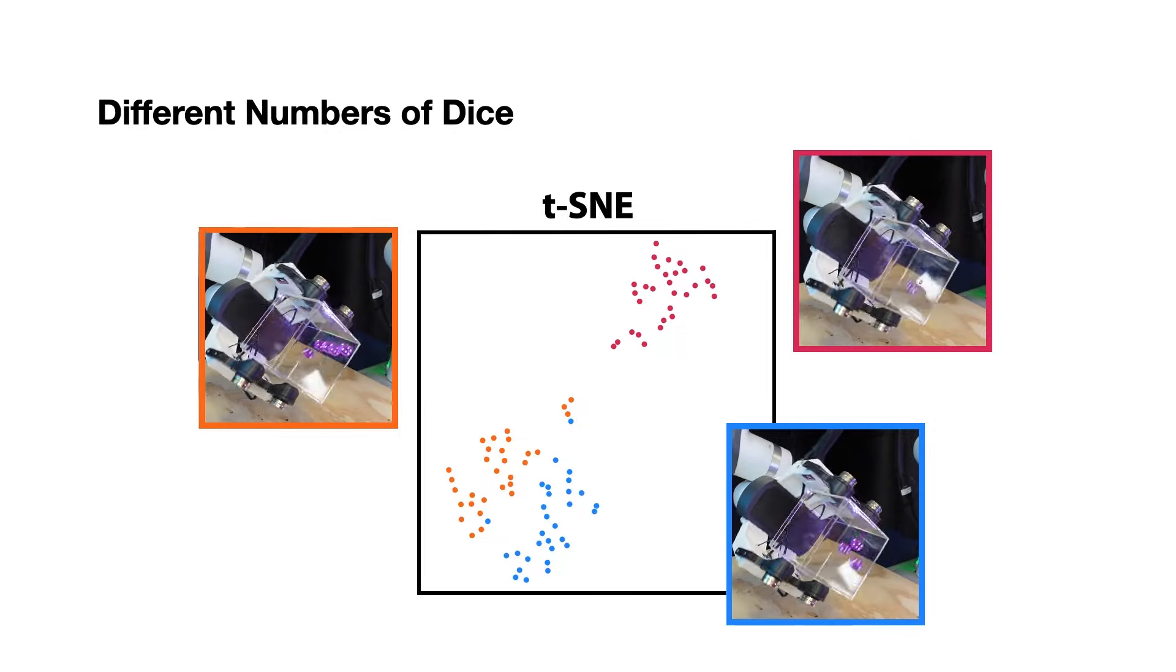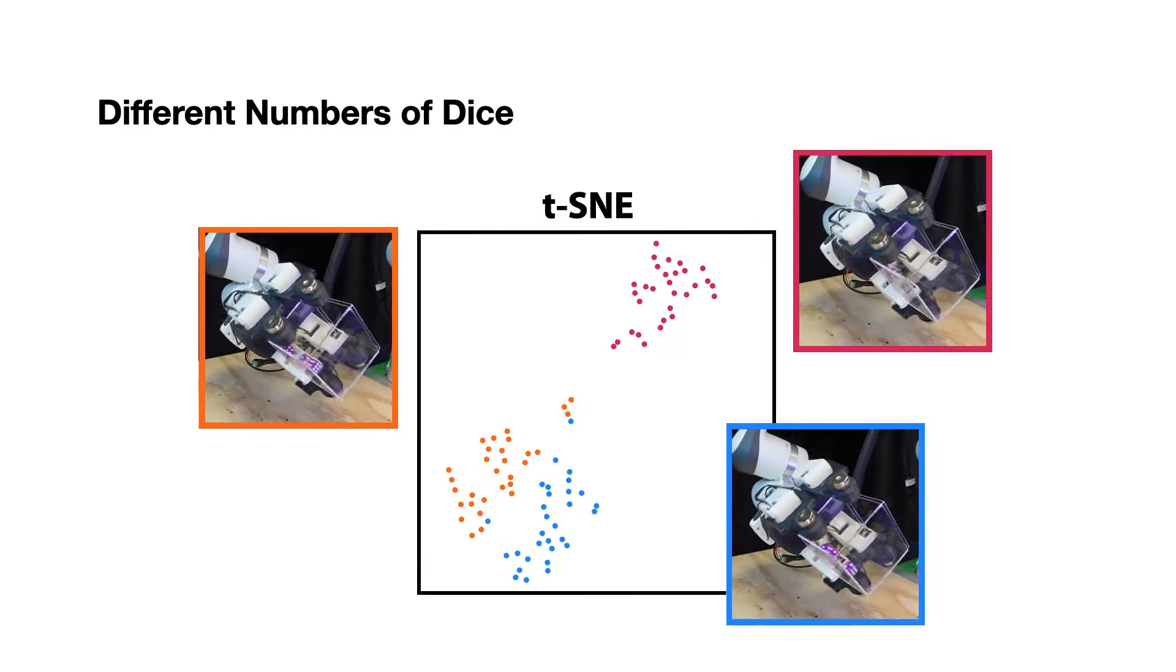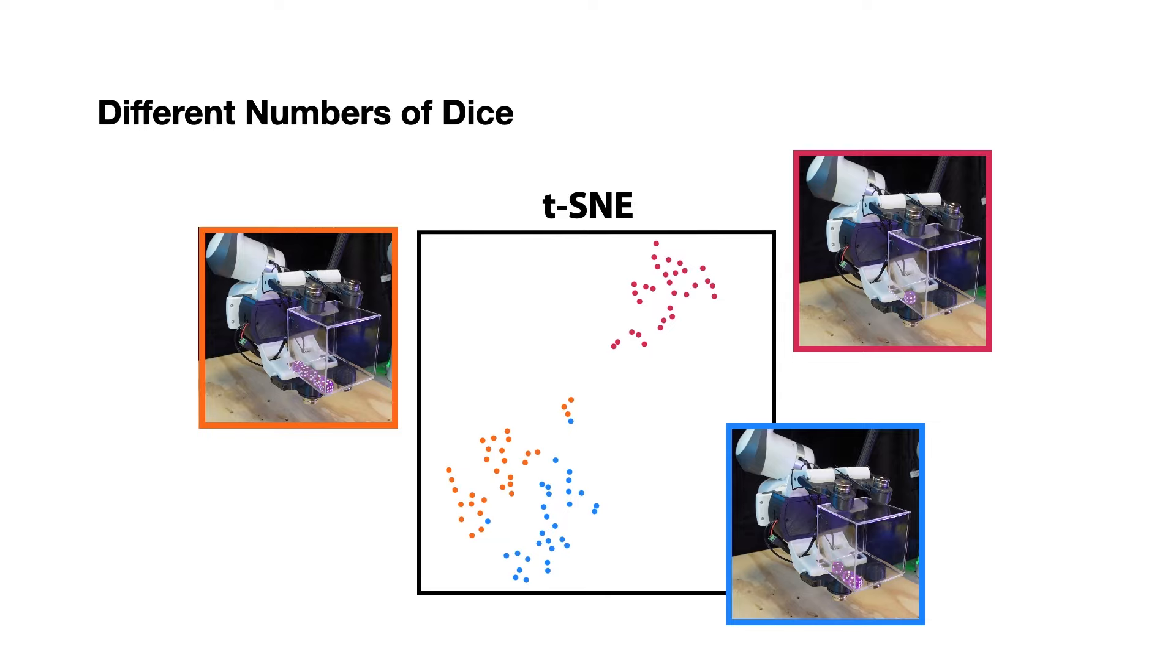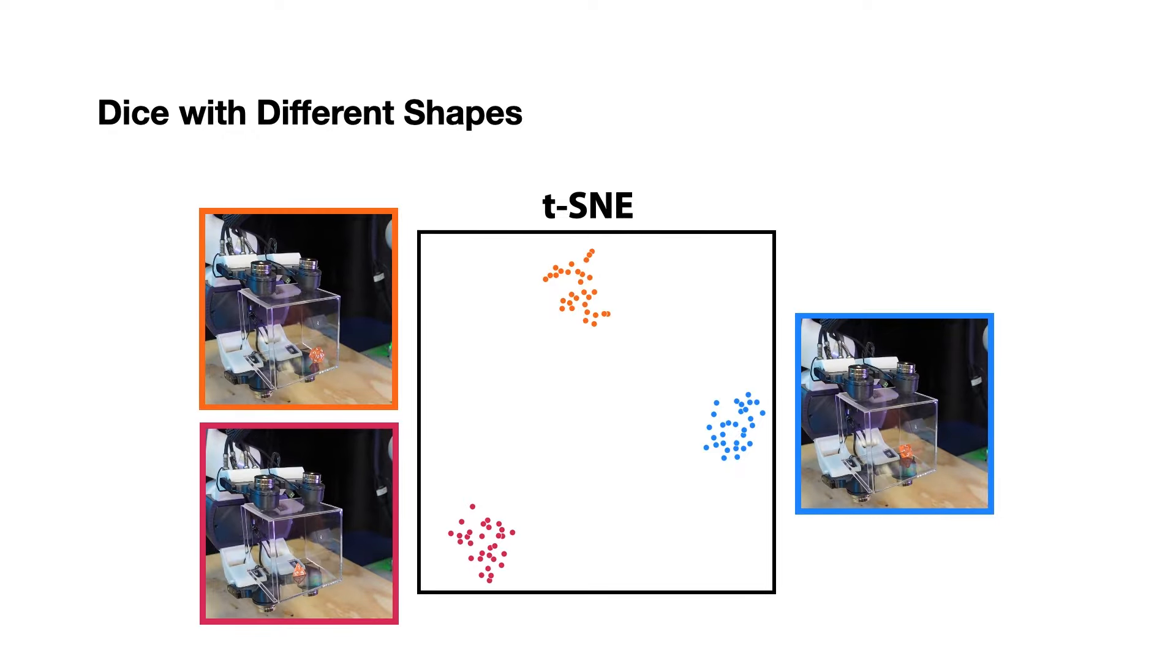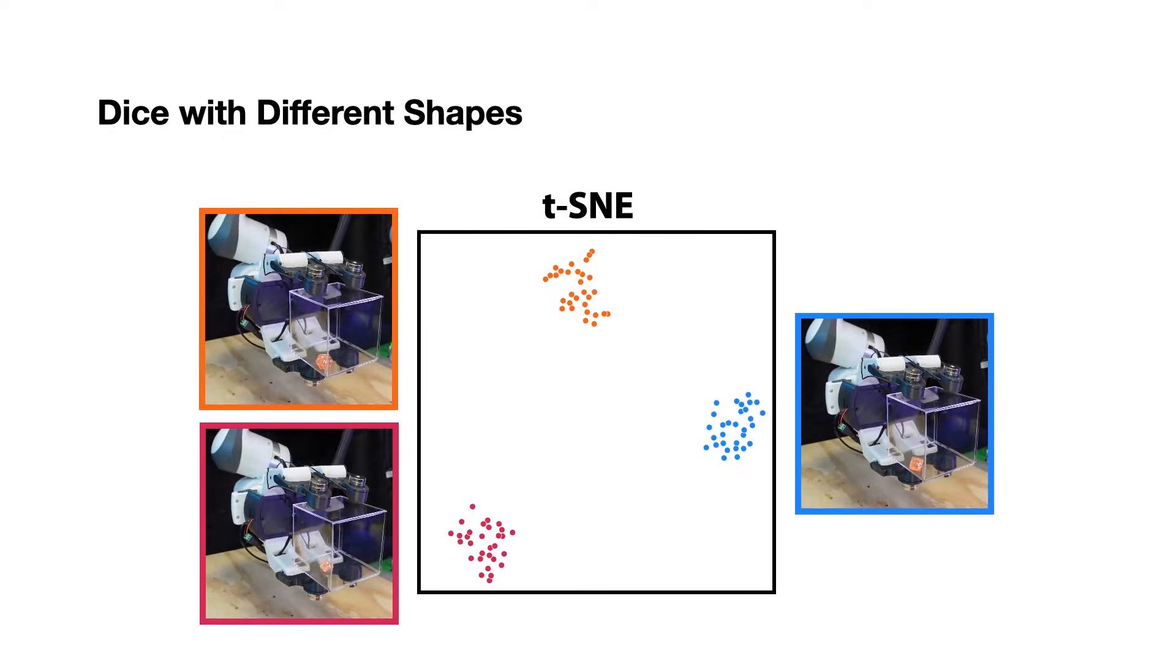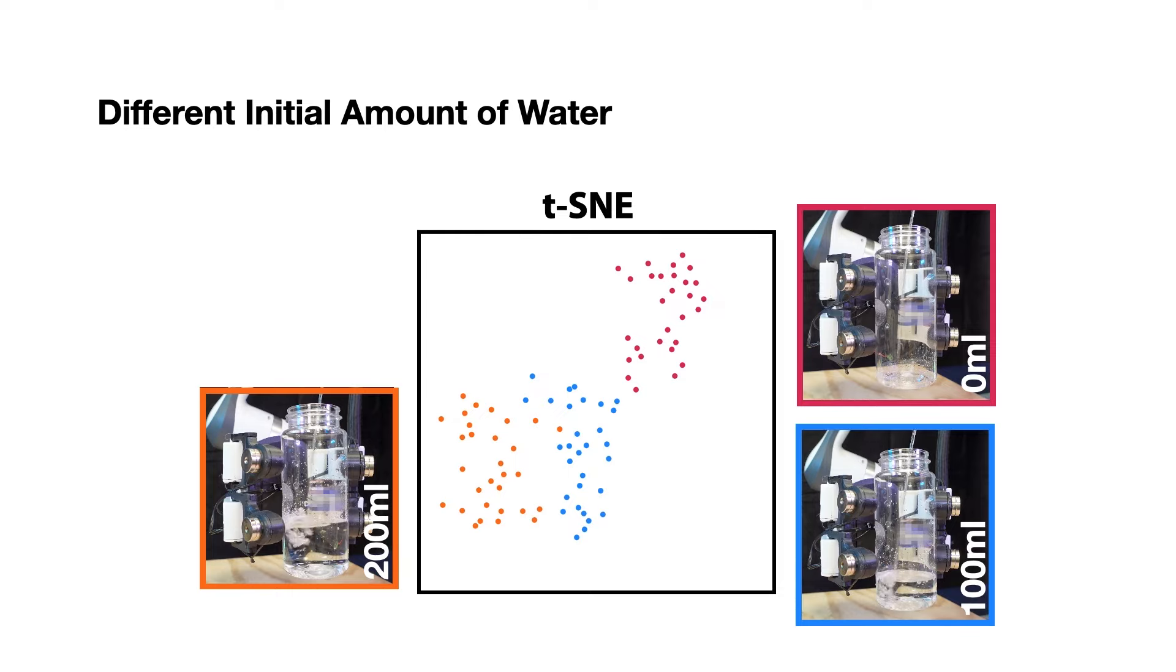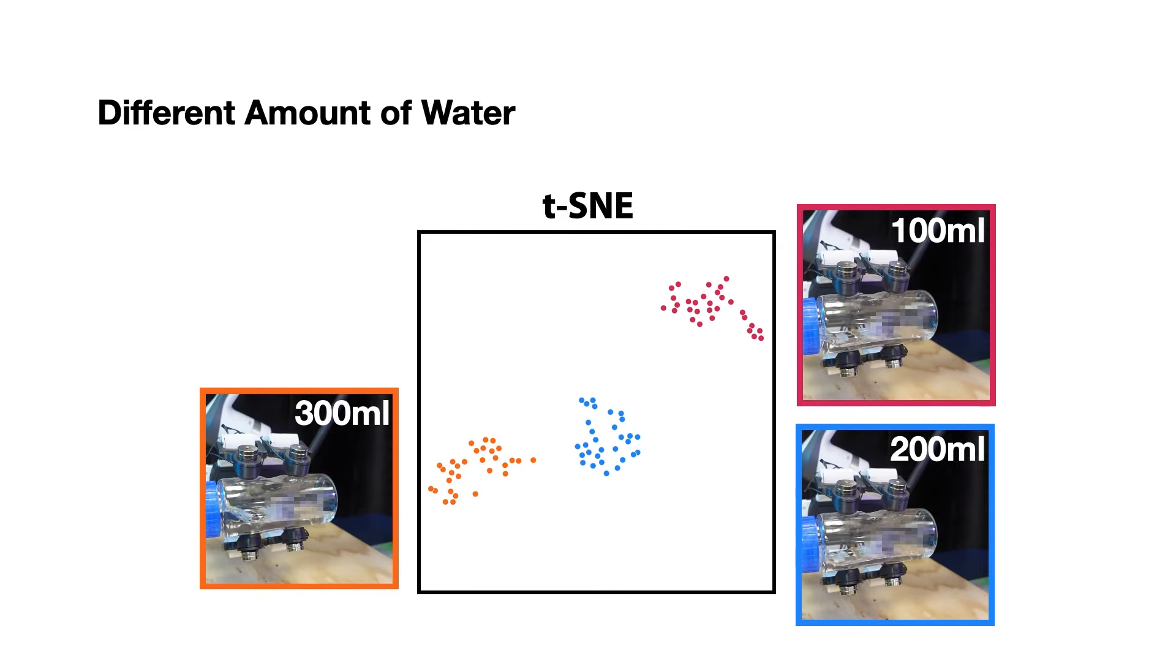We performed an unsupervised nonlinear dimensionality reduction with t-SNE on this 12-dimensional feature vector. By shaking the container, our robot can successfully distinguish different numbers of dice or dice with different shapes inside the container. When pouring water inside the bottle held by our robot, we can detect the subtle differences in acoustic signatures based on different existing amounts of water inside the bottle. Our robot can also detect different amounts of water inside the bottle when shaking it.